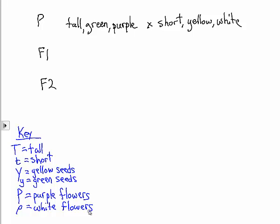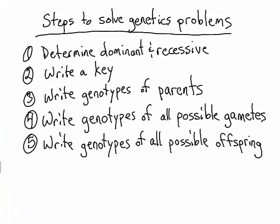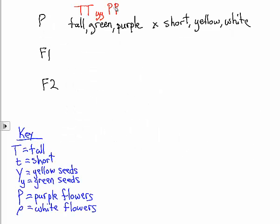Well, again, if we take a look at our steps to solve a genetics problem, we already have step 1, determine what's dominant and recessive. We've already written a key, so let's write the genotypes of the parents. The first parent would be big T, big T, little y, little y, big P, big P.